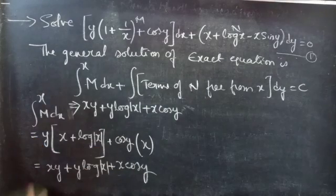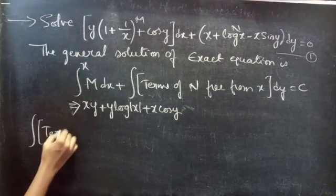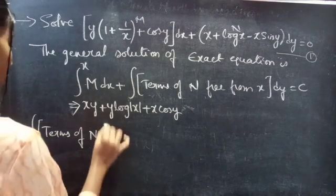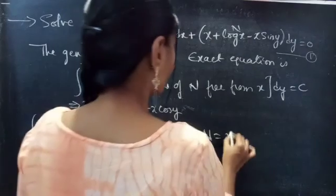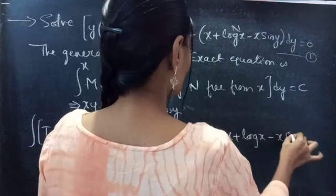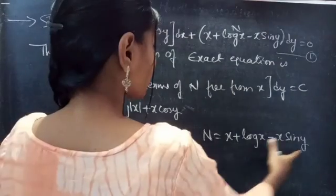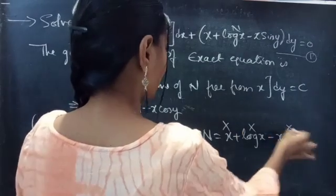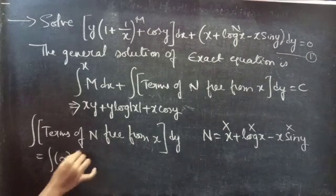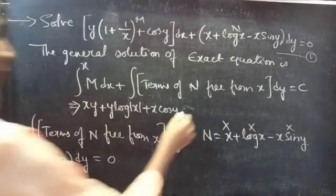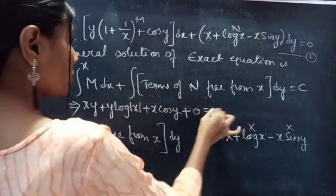Now we need to find the result for the second integral: integral of terms of N free from x into dy. We have N equals to x plus log x minus x sin y. Here we have to take the terms which are free from x. We don't have any terms free from x — the first term is x, second is log x, and third is x sin y. So the terms of N free from x is 0, and the integral equals to 0.